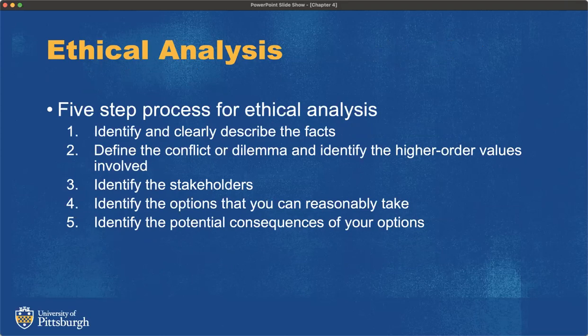When doing an ethical analysis using the five-step process, you should: clearly identify and describe any facts you have; identify the conflict or dilemma and the higher-order values involved; identify the stakeholders; consider any options you can reasonably take; and identify any potential consequences — not just the obvious ones, but second and third order consequences as well. If you take an action, what are all the cascading things that could possibly happen or go wrong as a result of that decision?